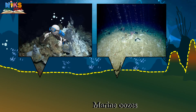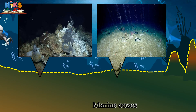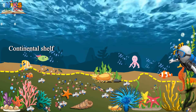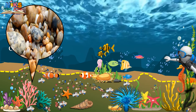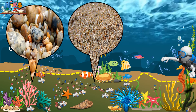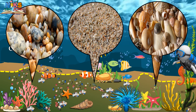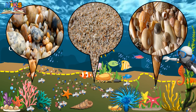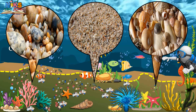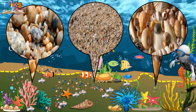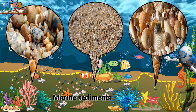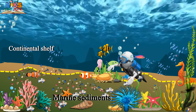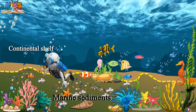Back at the continental shelf — pebbles, sand, soil, shells, etc. brought by rivers and glaciers from the continents are deposited here mainly on the continental shelf. These are called marine sediments. Now we will learn about artificial or man-made marine deposits.